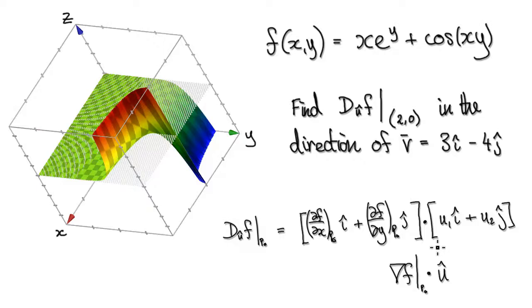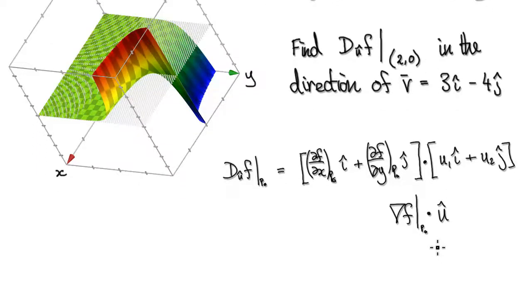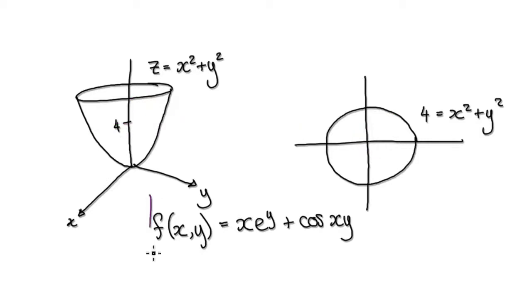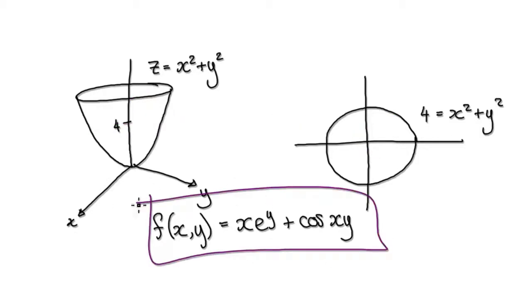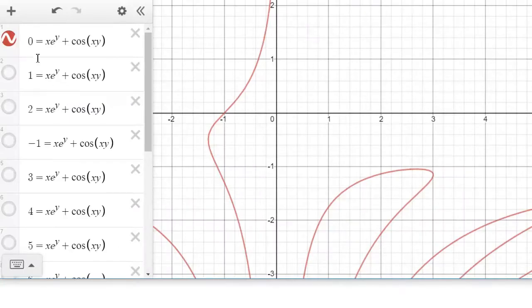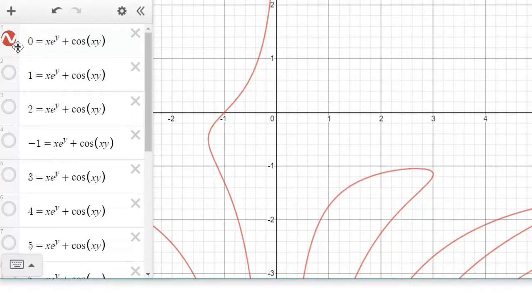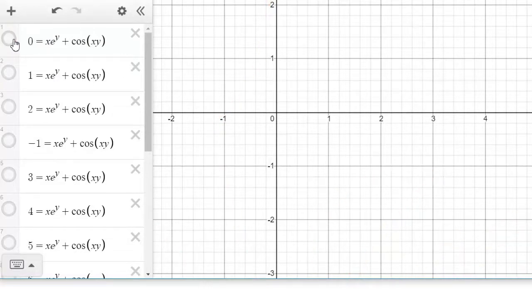We need to obtain our level curves. To obtain our level curves, if you want to cut the surface across at a certain height, you put that value into Z. So if you cut it at a level of 0, put 0 into this whole thing. Jumping to Desmos, this is our function. If you make it 0, it gives you a level curve for when the Z value equals 0, which would be this curve here.